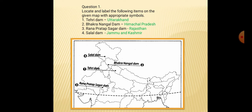Now we will see through questions. Locate and label the following items on the given map with appropriate symbols. Tehri Dam is located in Uttarakhand. Bhakra Nangal Dam is in Himachal Pradesh. Third, Rana Pratap Sagar Dam is situated in Rajasthan. And Salal Dam is situated in Jammu and Kashmir.